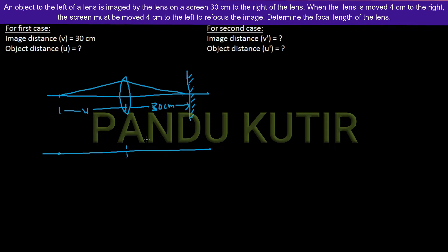This is the lens. Now I have an illustration. If you look at the image distance, you will see that it is 4 cm. Now let's change the image distance — the image distance is going to be 4 cm to the left. You can see the image distance is 4 cm.